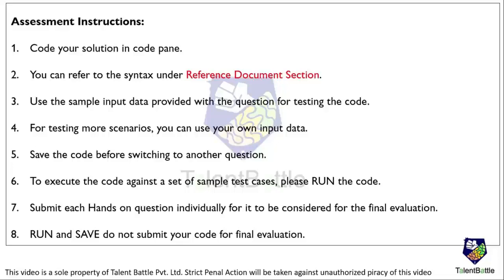You have to code your solution in the code panel provided by the NFTQ. While doing that, you can refer to the syntax under the reference document section, and using the sample input data provided with the question for testing the code is allowed. For testing more scenarios you can use your own input data. You have to save the code before switching to another question, and to execute the code against a set of sample test cases you have to run the code. While submitting each hands-on question individually for it to be considered for final evaluation, only run and save — do not submit your code for final evaluation. You have to explicitly click on the submit button so that your code will be submitted for final evaluation.